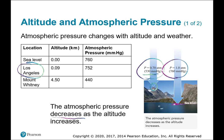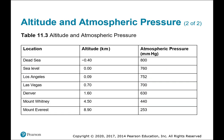Here are several more locations: the Dead Sea at negative 0.4 kilometers altitude — below sea level — LA, Las Vegas, Denver, and Mount Everest. Take a look at those and see how those atmospheric pressures compare.